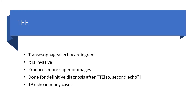Transesophageal echo (TEE) is invasive and produces more superior images compared to transthoracic echo. It is done for definitive diagnosis after TTE has been performed but is inconclusive. So while you can call it the second echo, it is also the first echo to be called for in many specific situations.